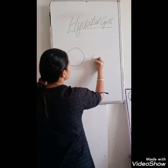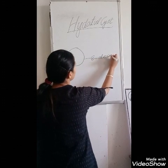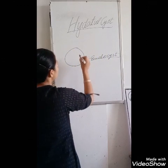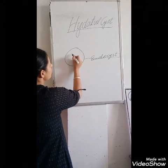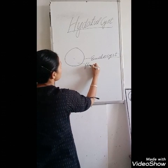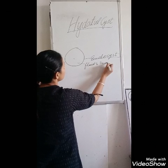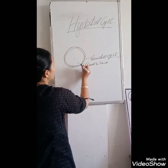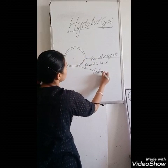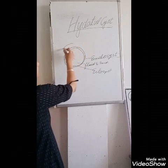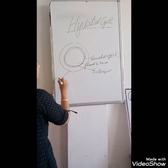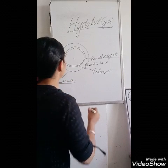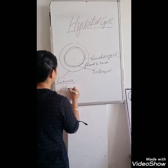The innermost layer is the endocyst, formed by the larval stage of Echinococcus granulosus. It secretes hydatid fluid and hydatid sand inside. Outside it forms a layer known as the ectocyst, and the outermost layer is formed by the liver in reaction to the parasite. This outermost layer is a thick fibrous layer.